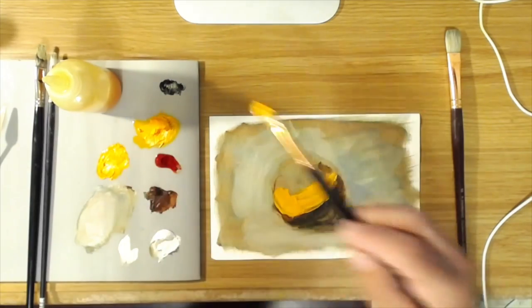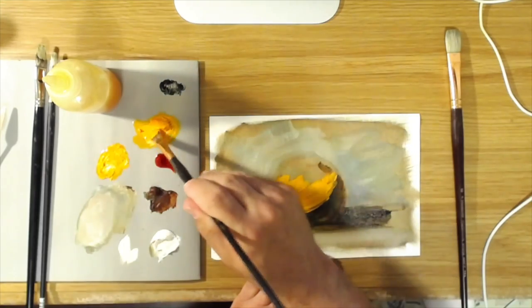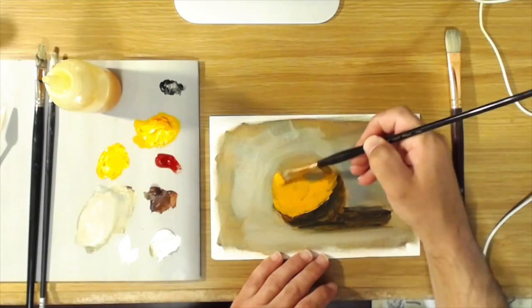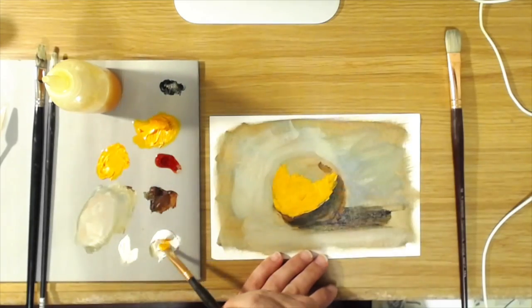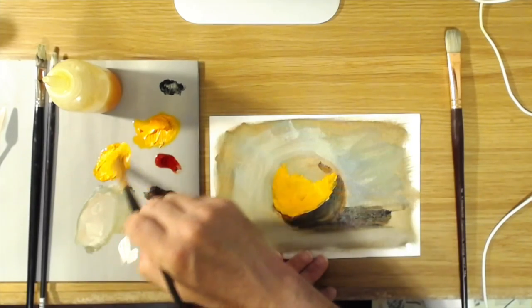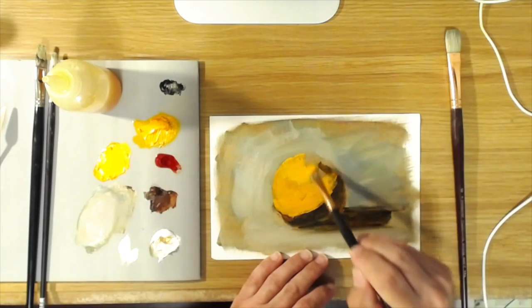Even though this orange is somewhat transparent, if you build it up in a sort of thick layer, it'll maintain the brush strokes, and then you can add white to it. And that will further cause it to become opaque.